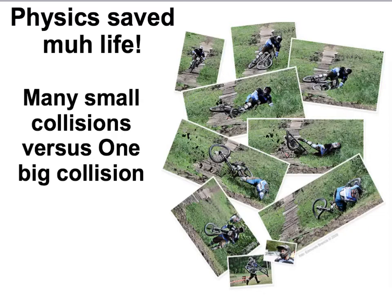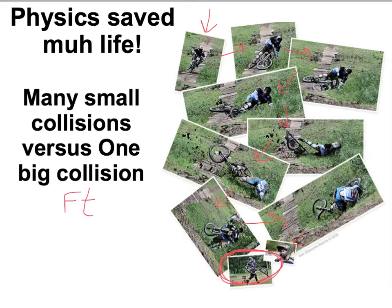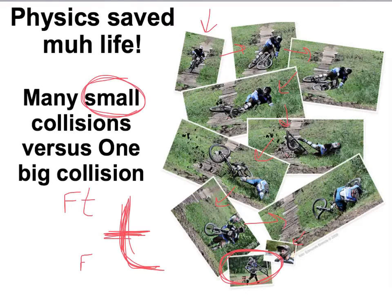Another example is crashes. Here's a crash of a dirt bike — a series of photographs where you can see somebody wiping out and their momentum stopping all the way to zero, but at the end the person gets up and walks away. By having many small collisions along the way, the biker increases the time of their change in momentum and that decreases the force. Many small collisions are a lot better in a crash than one big collision.